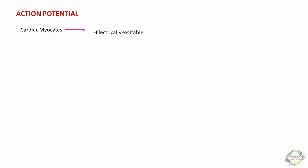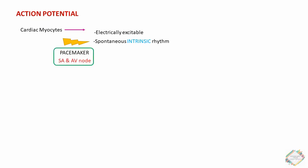When talking about the action potential, cardiac myocytes are electrically excitable and have a spontaneous intrinsic rhythm generated by specialized pacemaker cells located in the sinoatrial and atrioventricular (AV) nodes. Cardiac myocytes also have an unusually long action potential, which can be divided into five phases: phase 0 to phase 4.